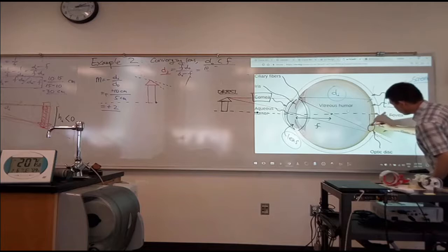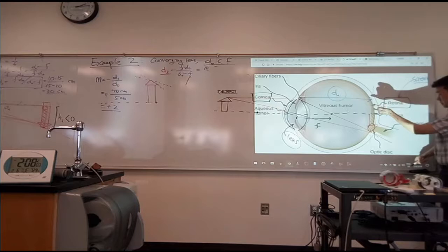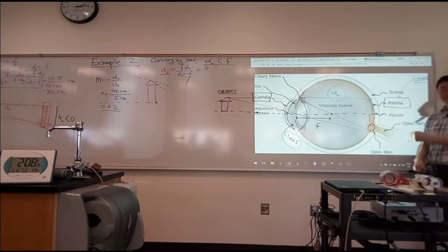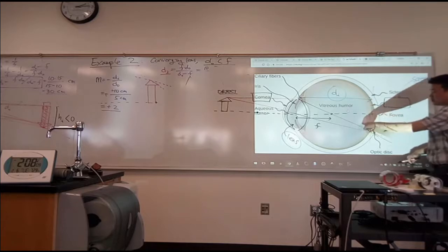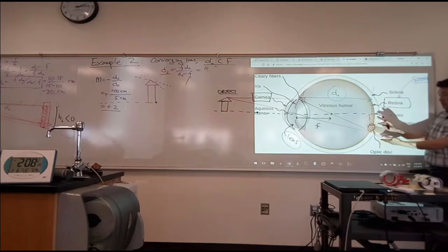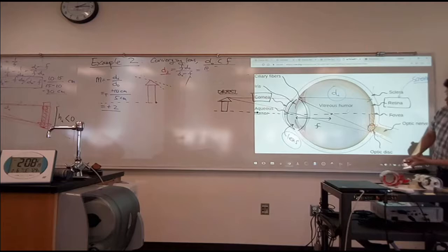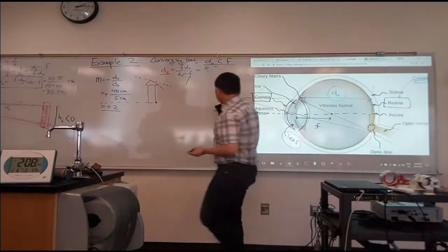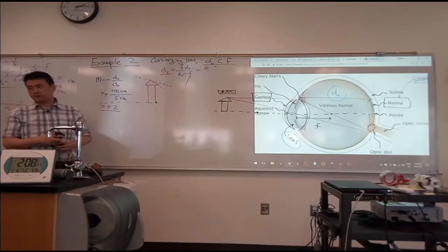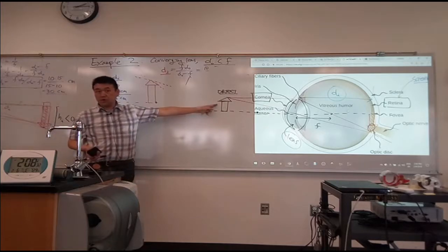When the light stimulates the cones and rods in your eye, that's where you sense that visual image of that object. Now, here's the reason I drew this picture: does anything change if this source of light is not a real object? Instead, this is a real image formed by another optical element.